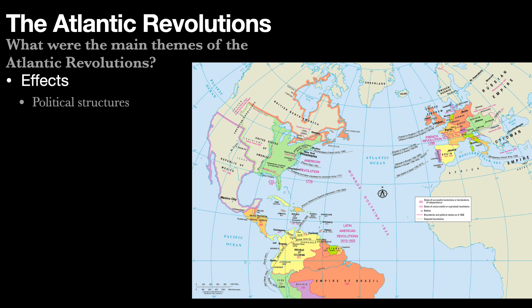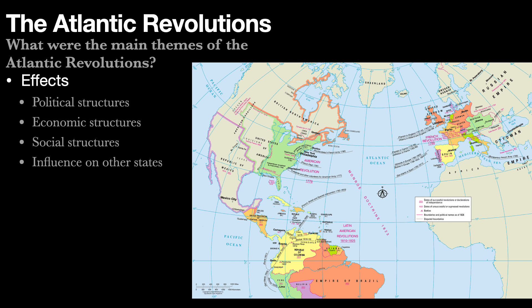In terms of effects, we can think about how these revolutions transformed political structures and how they changed — or didn't change — things economically or socially. What will be different here is to think about how any one revolution affected the states around it and the subsequent revolutions. And lastly, it's worthwhile to consider the difference between short-term effects — things that happen within five to ten years — and long-term effects, things more than ten years out. With that, we're going to dive into this a whole lot more together in class. Thanks.